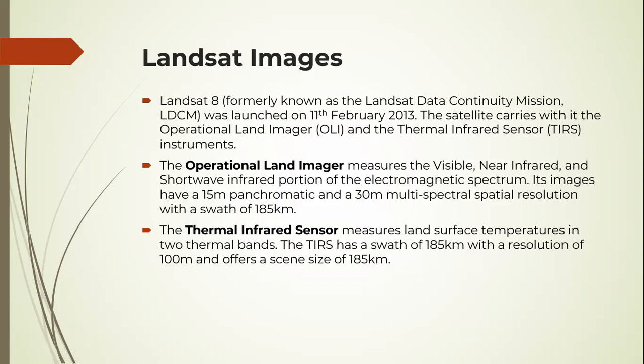The operational land imager measures the visible and near infrared and shortwave infrared portions of the electromagnetic spectrum. Its images have a 15-meter panchromatic and a 30-meter multi-spectral spatial resolution. The spatial resolution swath is 185 kilometers.